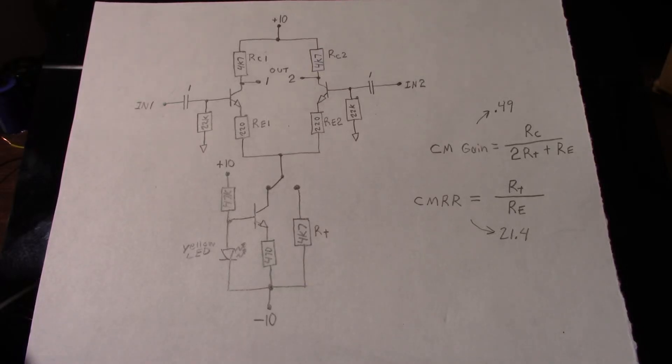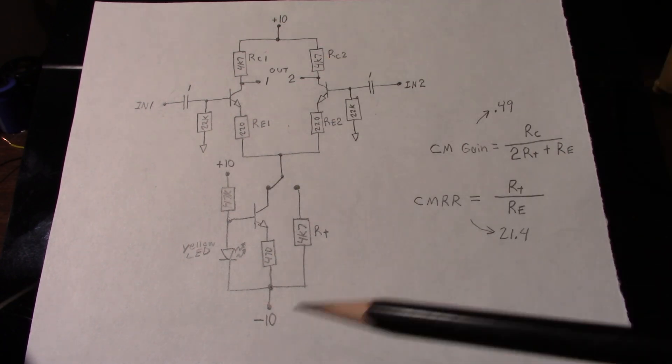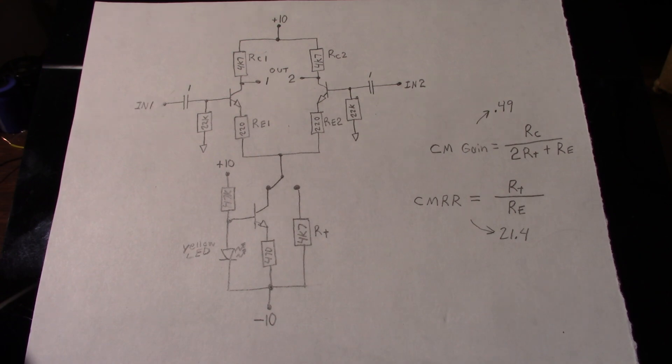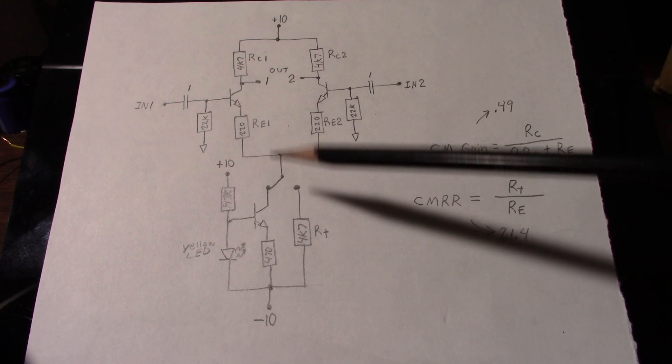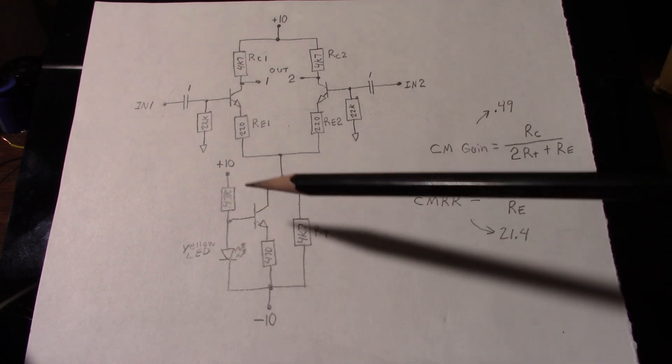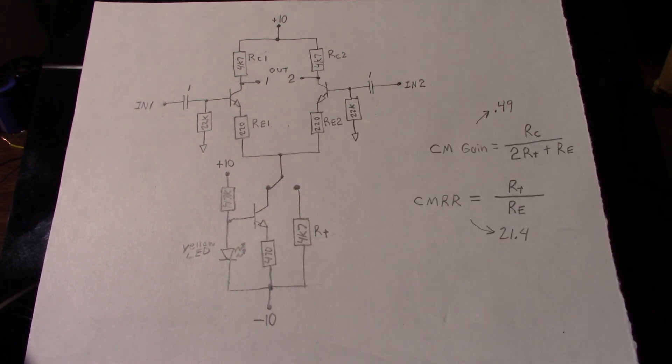Greetings everyone! I want to make a follow-up video to the last video about the long-tailed pair circuit where we're talking about improving its common mode rejection by adding a constant current source into the tail section of the amplifier.